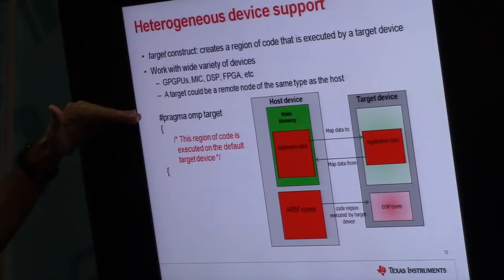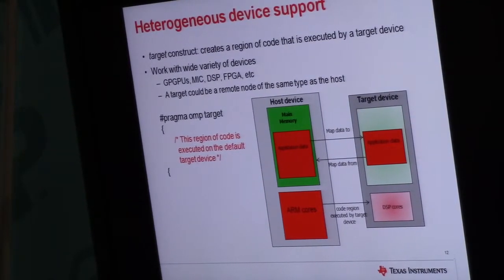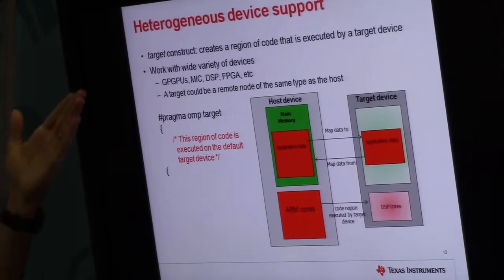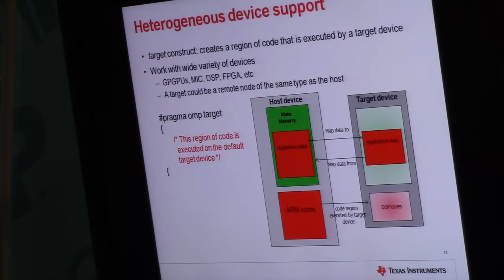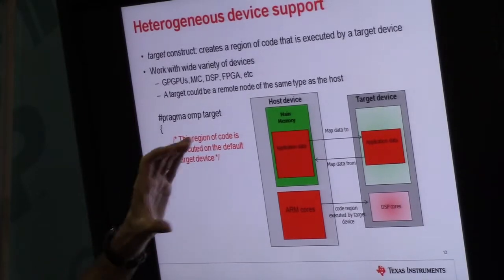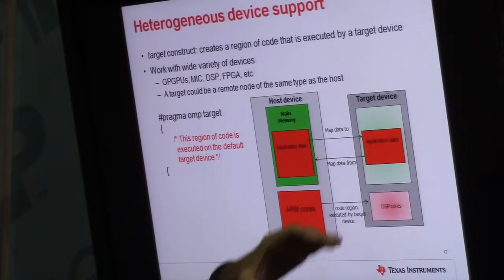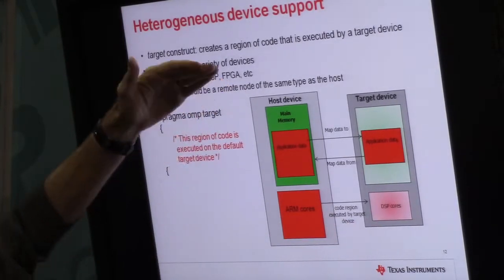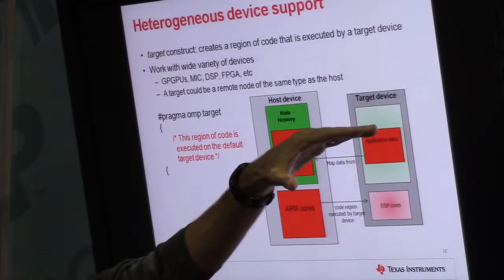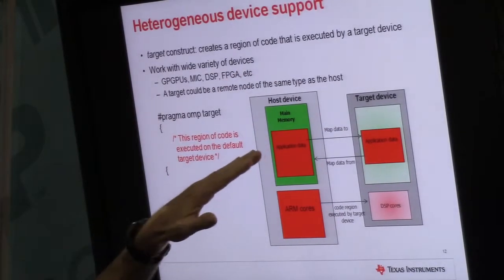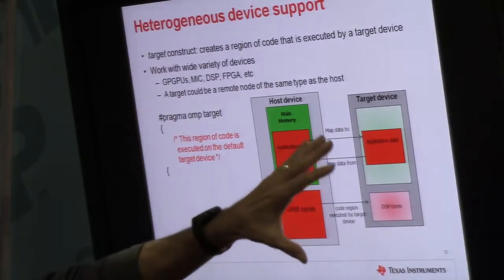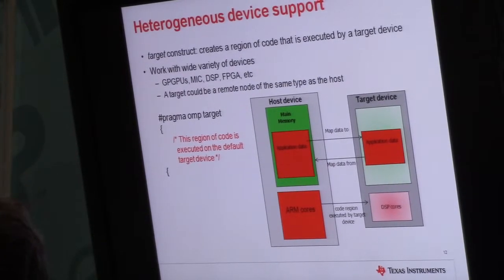In OpenMP 4.0, we added the target construct. I say 'we' because I'm part of the committee that actually defined the OpenMP 4.0 specification, in particular these new device constructs — the accelerator model. We have this new OMP target construct that enables you to offload code and data to a separate device, in this case our DSP cores. The host device is our ARM cores running SMP Linux, offloading code to the target device — our DSPs. We have this concept of mapping data to and from the device, and for our device we're leveraging shared memory rather than doing a copy.